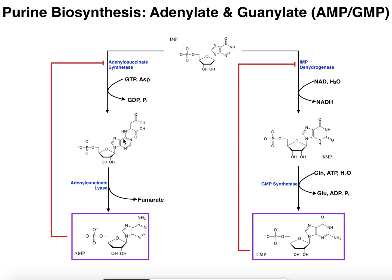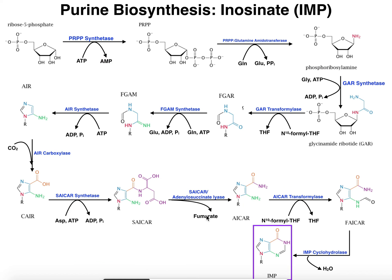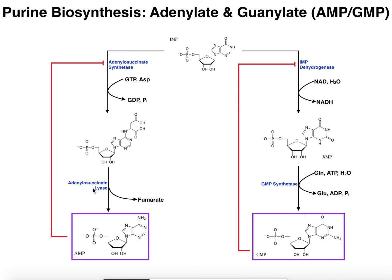This adenylosuccinate is then going to be consumed by adenylosuccinate lyase. Adenylosuccinate lyase is actually the identical enzyme to what we saw as the third-to-last enzyme in IMP biosynthesis. Some texts will call it CSICAR lyase because its substrate is CSICAR, but most common texts refer to it as adenylosuccinate lyase, and that's the same enzyme we have here.